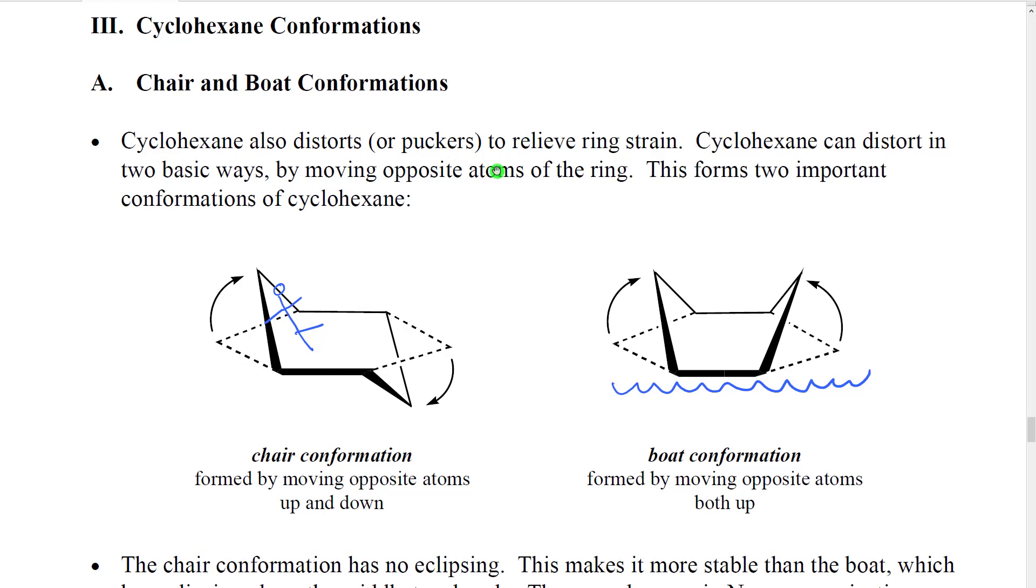Now cyclohexane distorts in two ways. However, that distortion involves two points, two atoms on opposite ends of the molecule moving simultaneously. The first one involves having one atom move up out of the plane while the one on the opposite side moves down. And we get this zigzagging shape that looks like this.